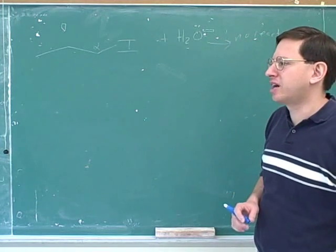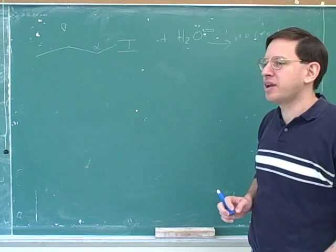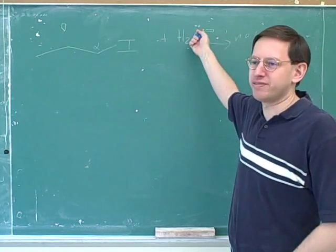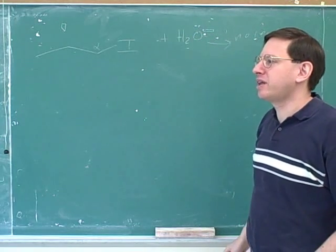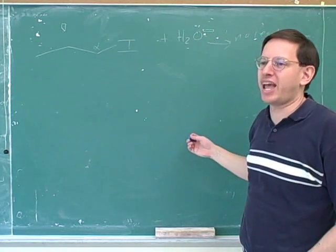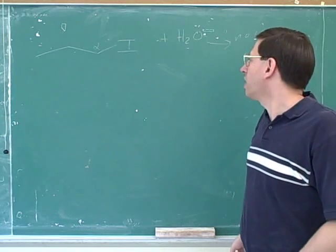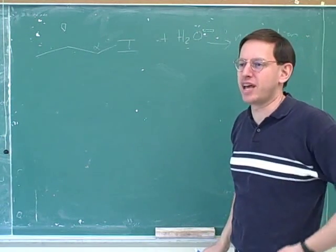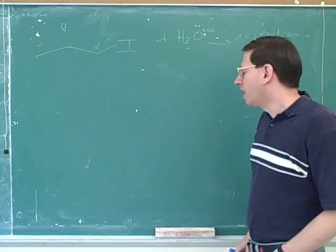So the big obstacle is stabilizing the carbocation. The carbocation is so unhappy, it'll accept any nucleophile you throw at it, basically, even a poor nucleophile. So there's nothing the nucleophile can do to stabilize the carbocation. So the nucleophile quality doesn't matter here for SN1. That's pretty much exactly what you said.